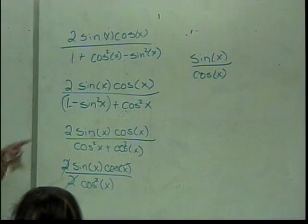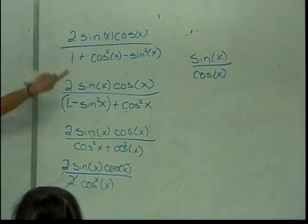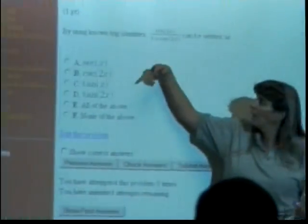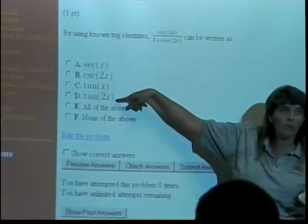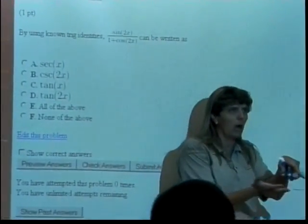Now we're kind of clued in that we have to make the denominator into a single thing by the fact that this is clearly just 1 over cosine. This would be 1 over sine, this is sine over cosine, this is something sine over cosine. So we need the denominator to be a single item.